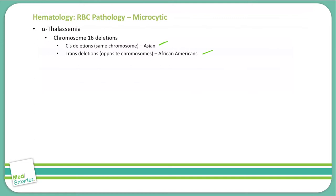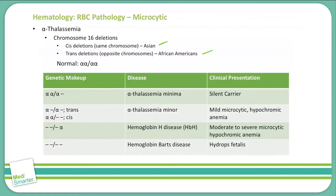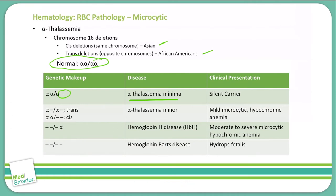There are four different types of alpha thalassemias. Normal genetic makeup includes four alpha chains. If you are missing one of those alpha chains, that is alpha thalassemia minima. This is essentially silent — the person is a carrier only and typically does not show any symptoms.